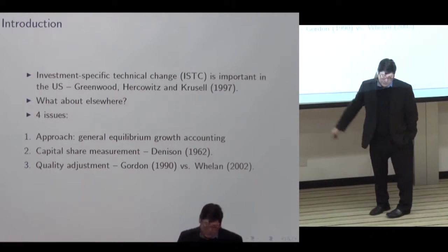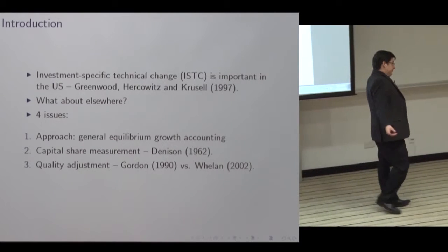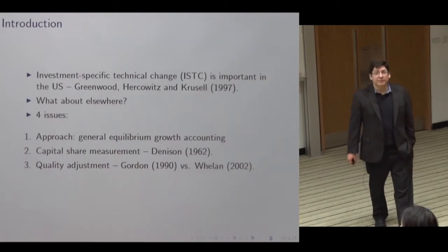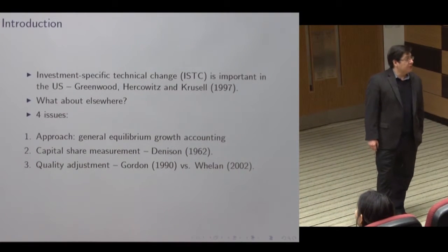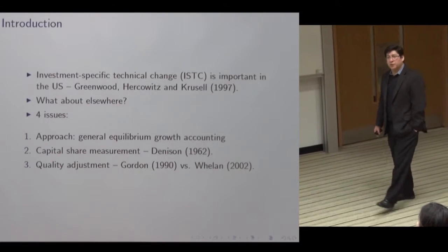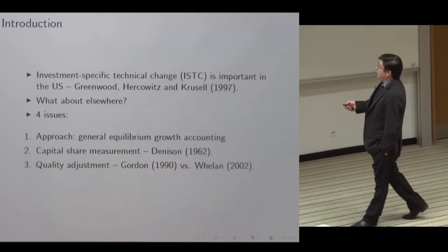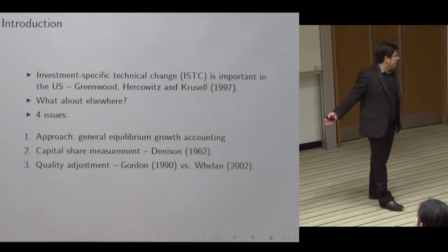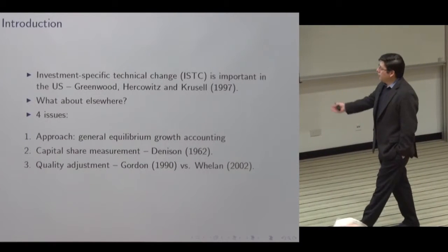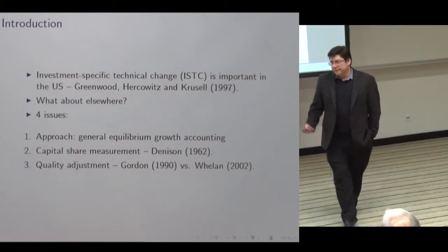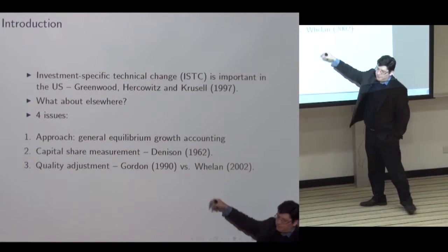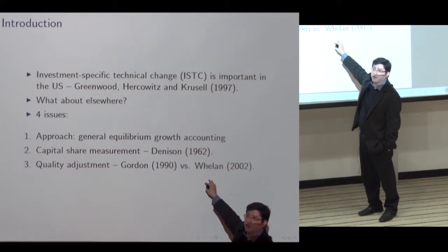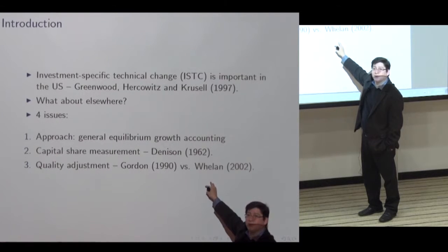People who work in this literature generally say yes, you need to adjust for quality, because we see that in computers particularly, but also in other forms of capital, there are drastic improvements in quality. So we should be using hedonic prices or some other way to measure capital quality when trying to get efficiency units. In contrast, there is the view of Hulten, which is that the relative price of capital is the price of capital divided by consumption, so we should be quality adjusting both numerator and denominator, not just one of them.